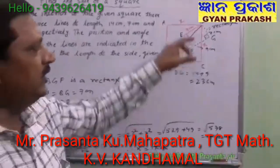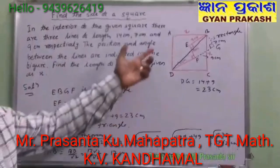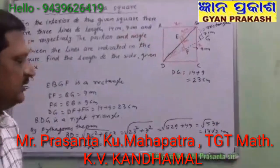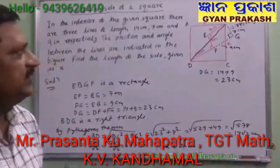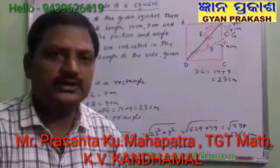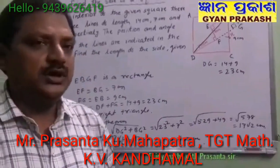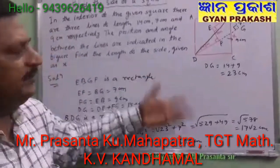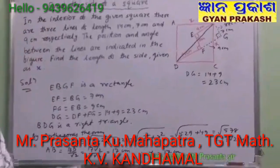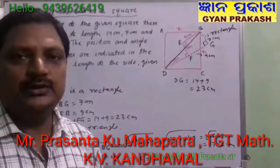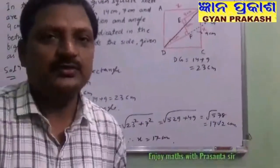So in this way, we have found out the value of the side of the square, and that is 17 cm. I think you have understood this question, and we shall take up some more such questions. You can also share some difficult questions for us to solve here. If you like this video, please subscribe to my channel. Thank you.